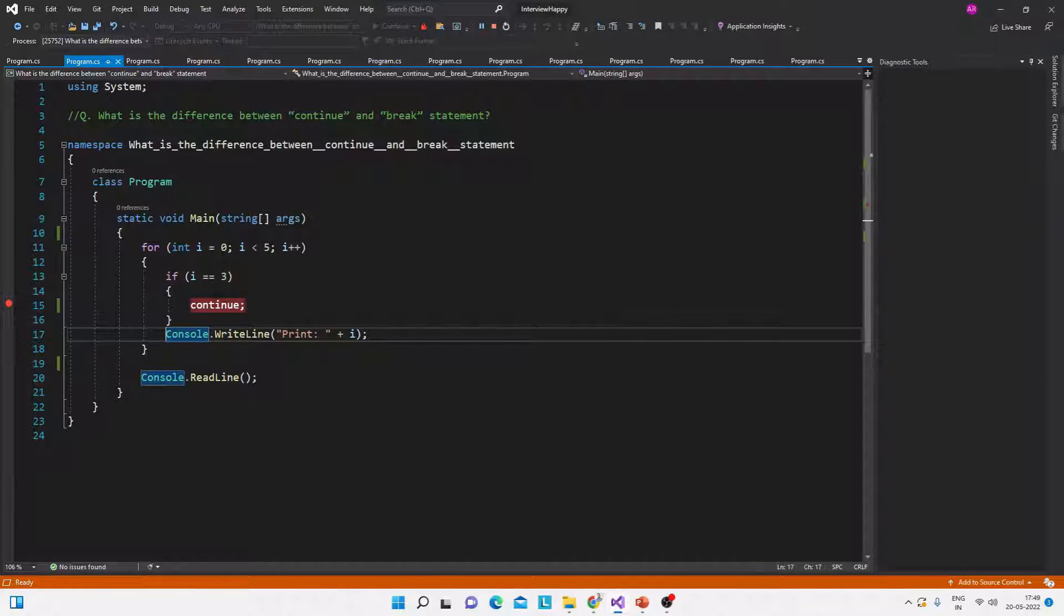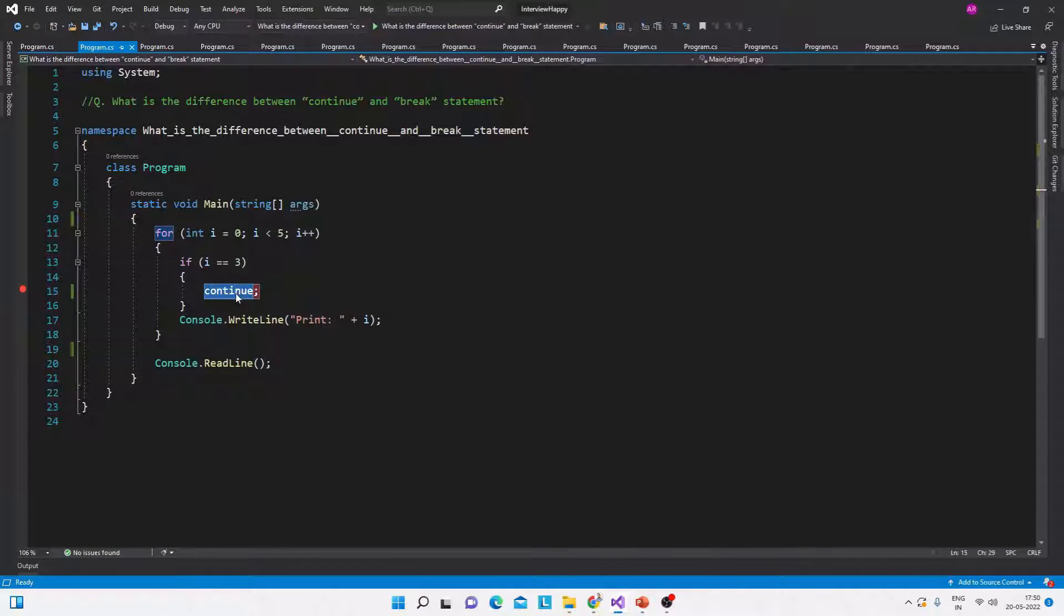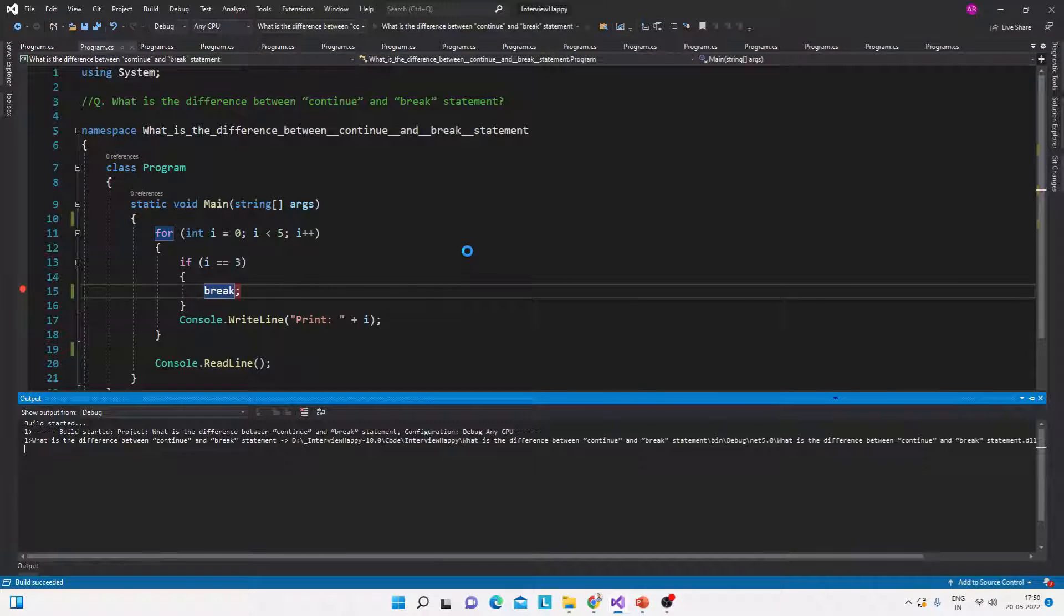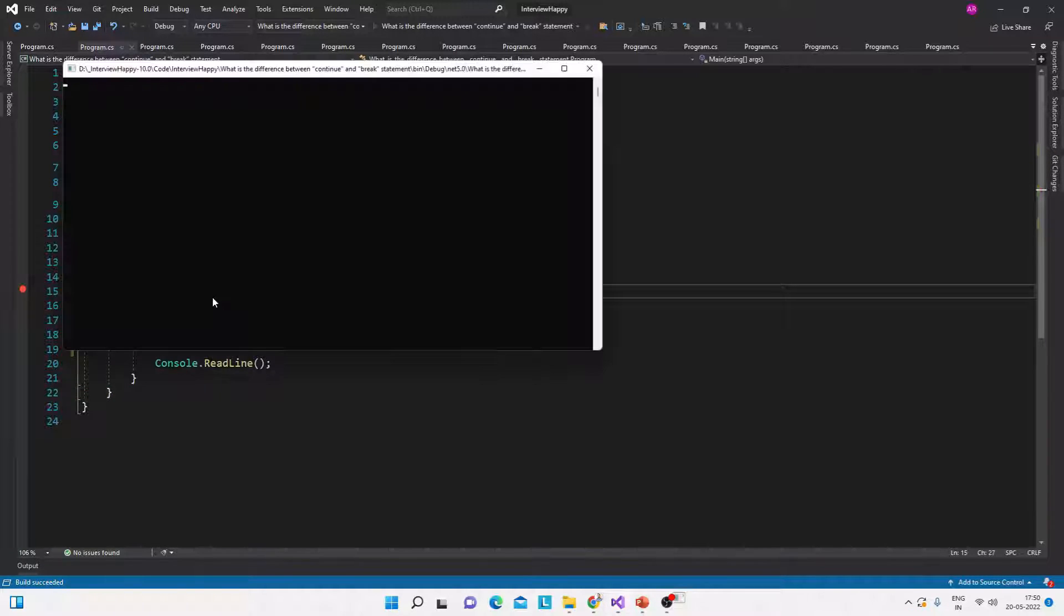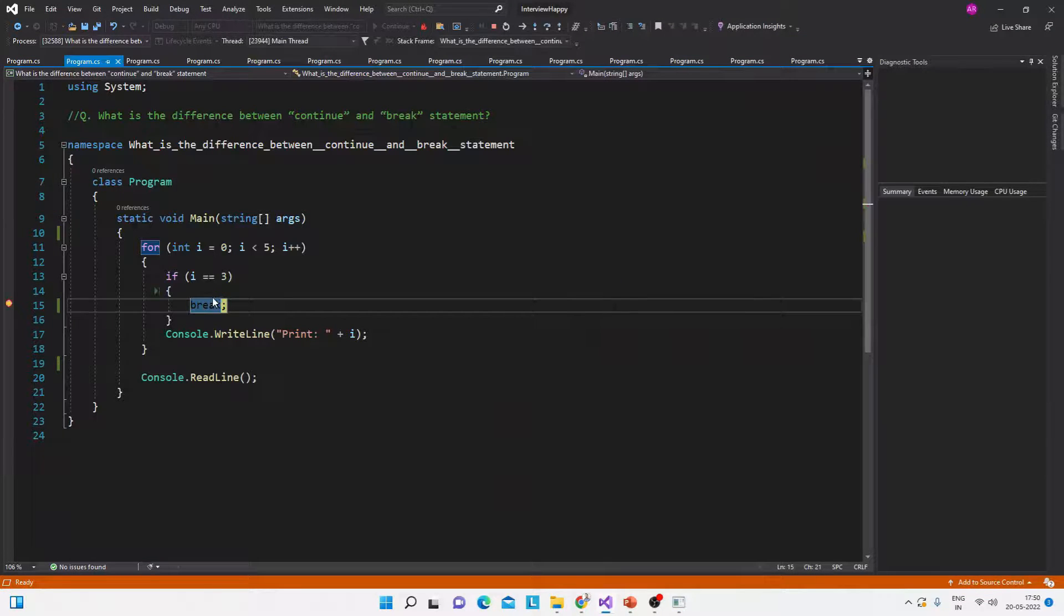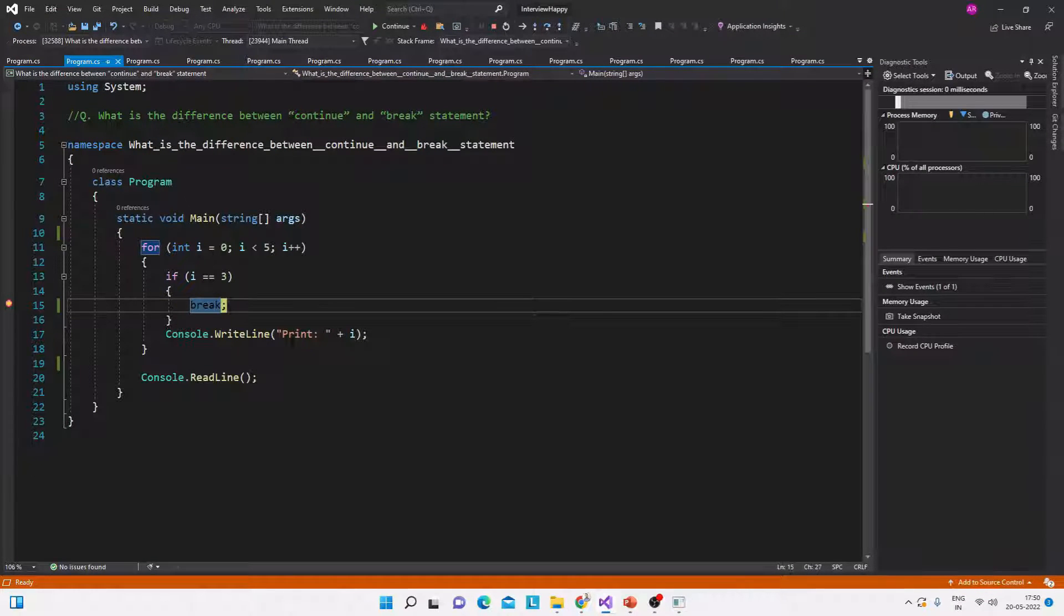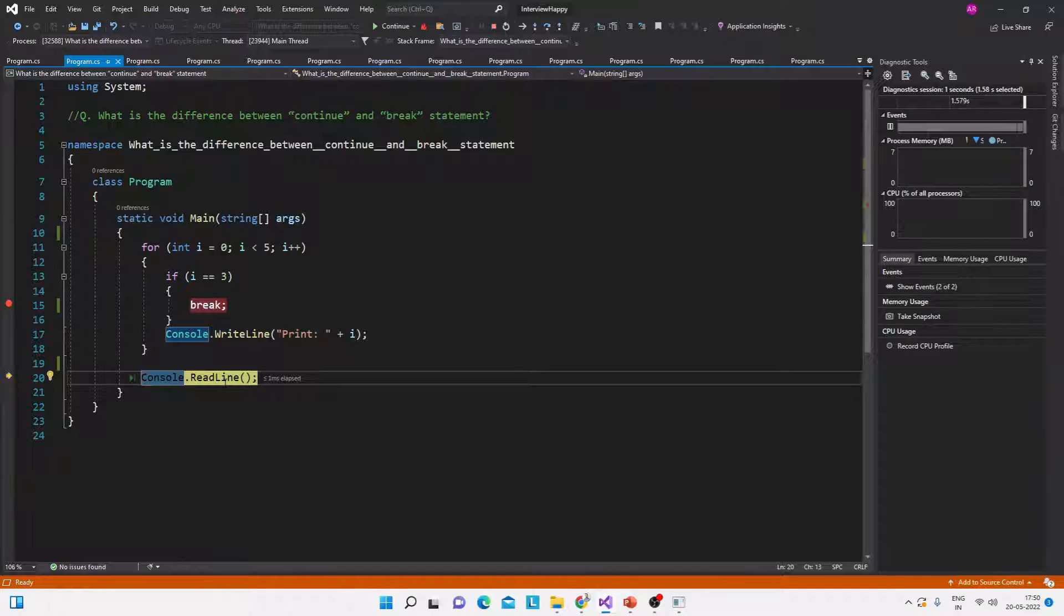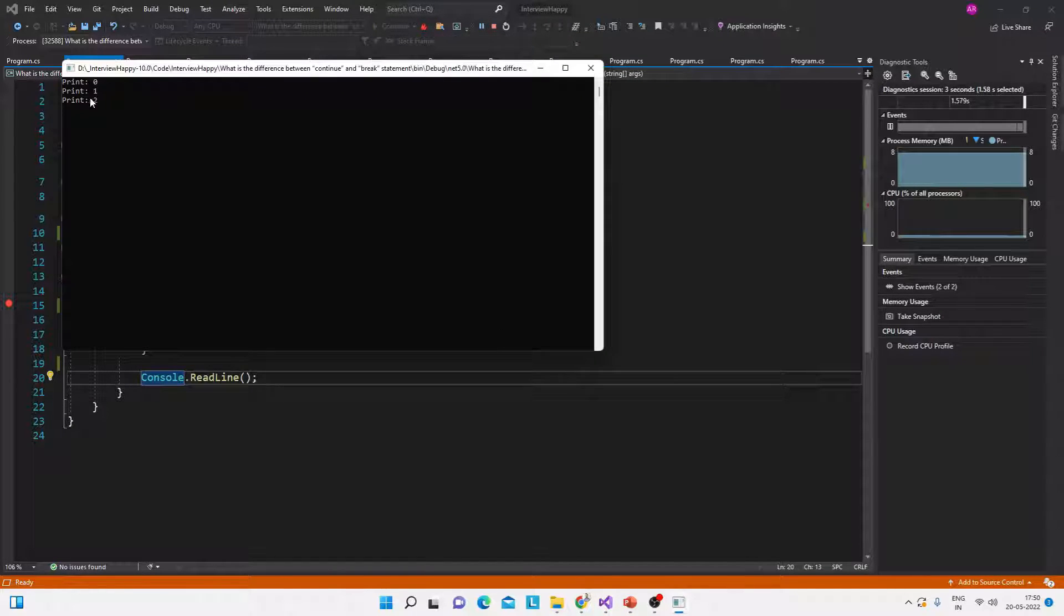Now let's see the break. What will break do? We will run the program. See, right now the breakpoint is at the break line. Then I will F10 it and it will suddenly go out of the loop. So rest of the statements will not be executed. So 0, 1, 2, no 3 and no 4.